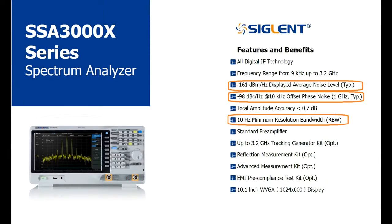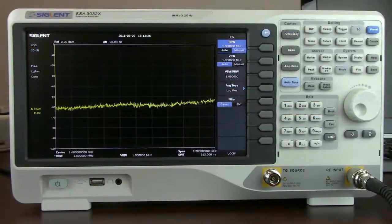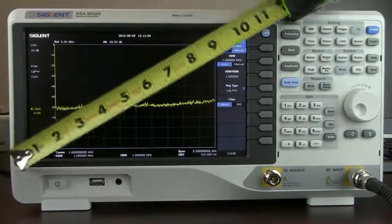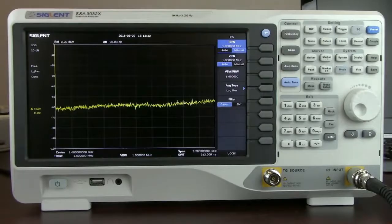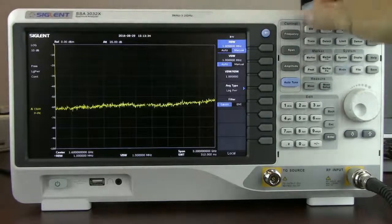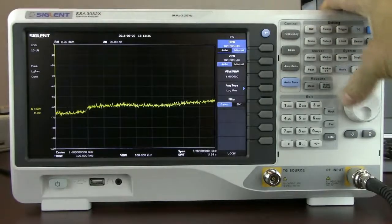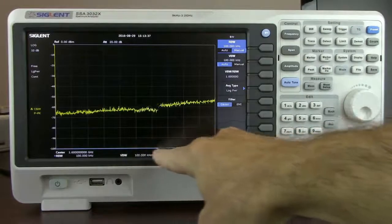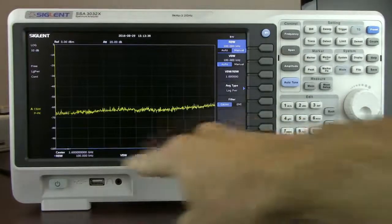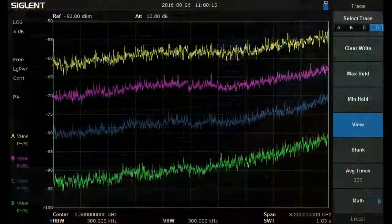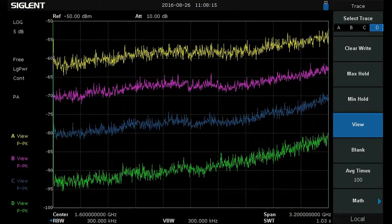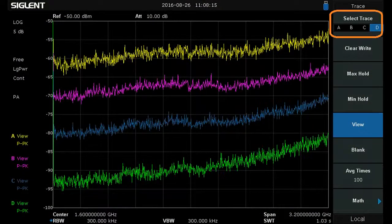The SSA 3000X also features a 10 inch WVGA display and it does measure a full 10 inches or 10.1 with about 7 inches of actual trace area. And also when you slow down the resolution bandwidth in a sweep you'll see that there's a progress bar that helps indicate exactly where you are located in the frequency space which is nice.